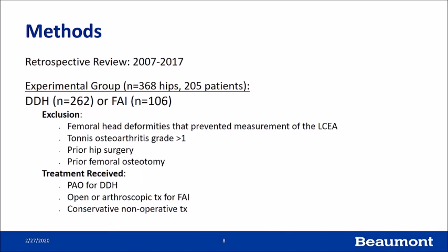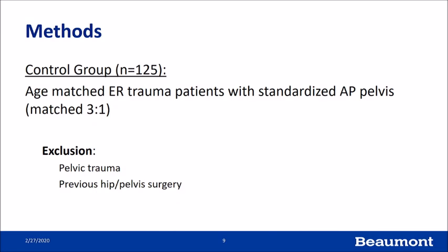Our patients were identified by retrospectively reviewing charts. We identified 368 hips in 205 patients: 262 had dysplasia and 106 were treated or diagnosed with impingement. We excluded patients who had femoral head deformities preventing measurement of the lateral center edge angle, arthritis, prior hip surgery, or prior femoral osteotomies. We recorded the diagnosis, treatment received, and whether they were treated with open or arthroscopic treatment for impingement or conservative versus operative treatment in general.